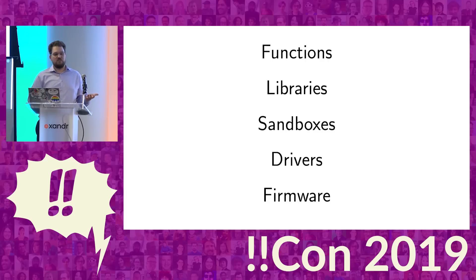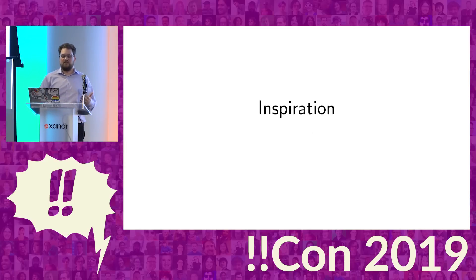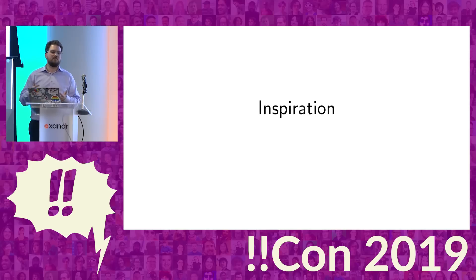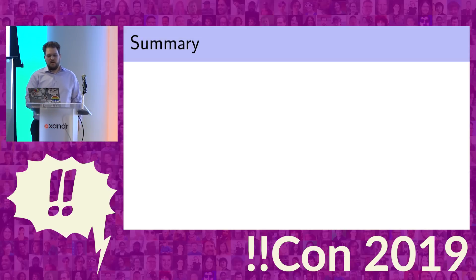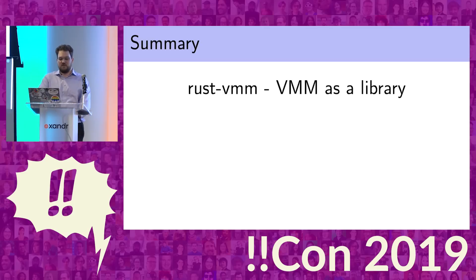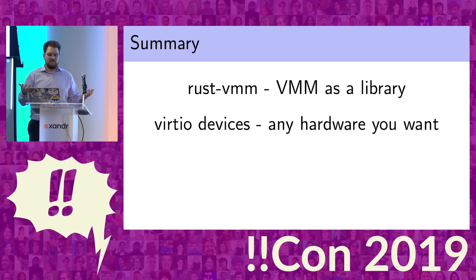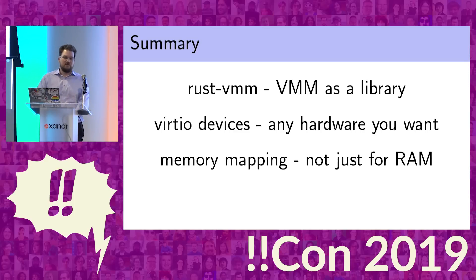So what could you do with that? Functions, libraries, sandboxes, drivers, arbitrary firmware that you're testing — all sorts of fun things. I want to inspire the idea that you can play with a virtual machine, run interesting code in it, experiment with it, and a virtual machine as a library gives you the ability to do this with roughly a page of Rust code. To sum up briefly: RustVMM gives you a virtual machine as a library. If you want to build hardware devices, you'd use the VirtIO mechanism to give you any hardware that you want. You can memory-map things that are more than just RAM, and it's a lot of fun to play with.